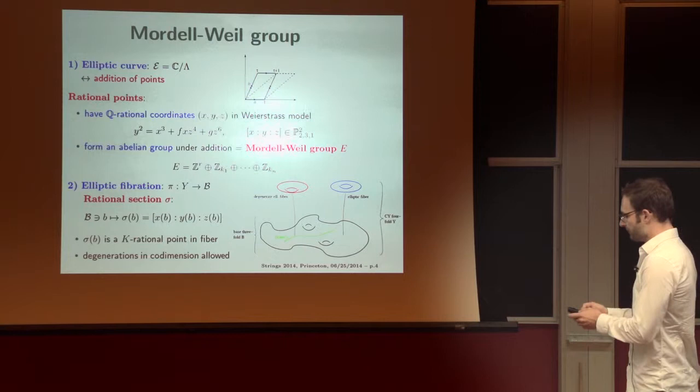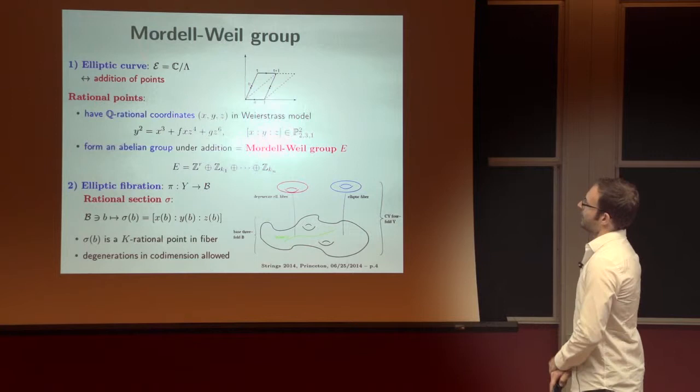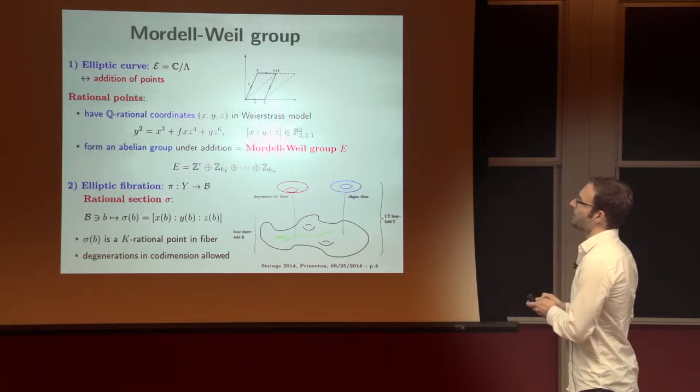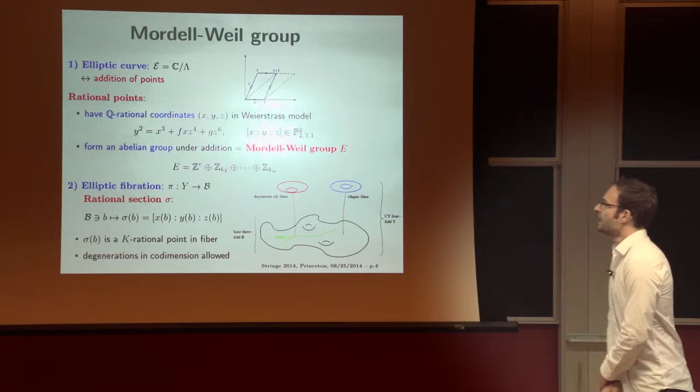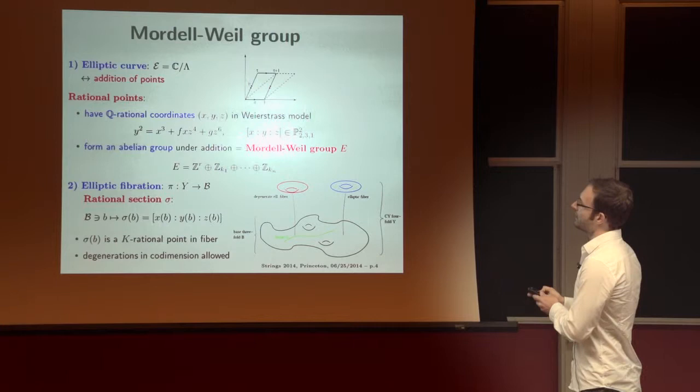Let's first look at just an elliptic curve, and think of it, for example, as the complex plane modded out by a lattice. It is then obvious that there is a natural notion of addition of points. In fact, elliptic curves can also be represented as Weierstrass models, so as hypersurfaces in a weighted projective space, and in this representation, a special set of points are the rational points. These are the ones that have rational coordinates in x, y, z, and lie on that hypersurface. It turns out that these form an abelian group, under addition the Mordell-Weil group, and this group is a finitely generated abelian group, so it has a non-torsional piece, R being the rank, and a torsional piece.